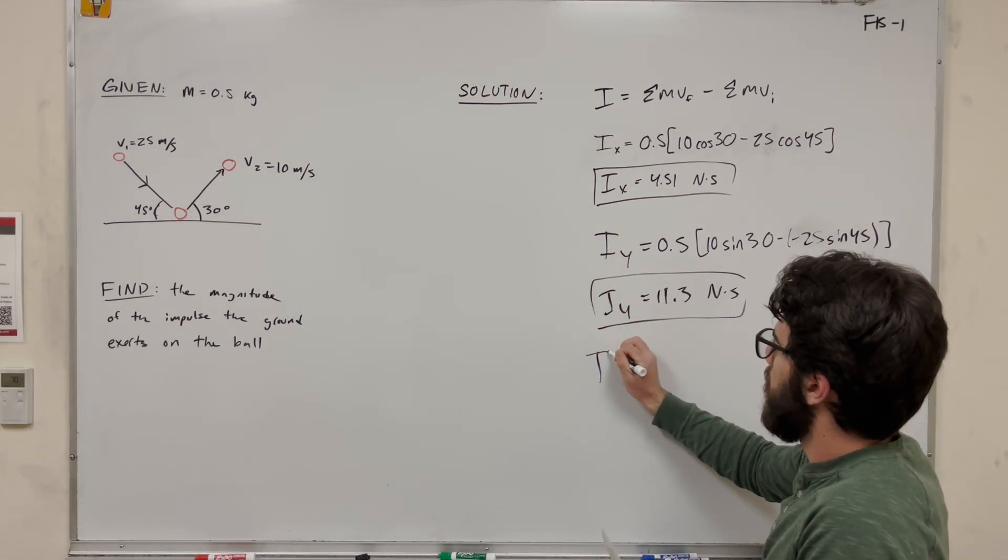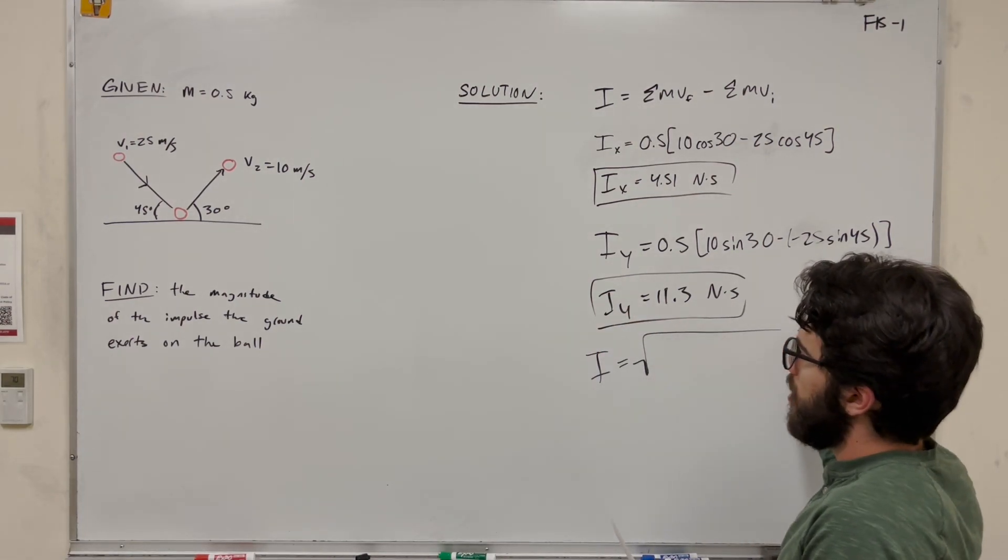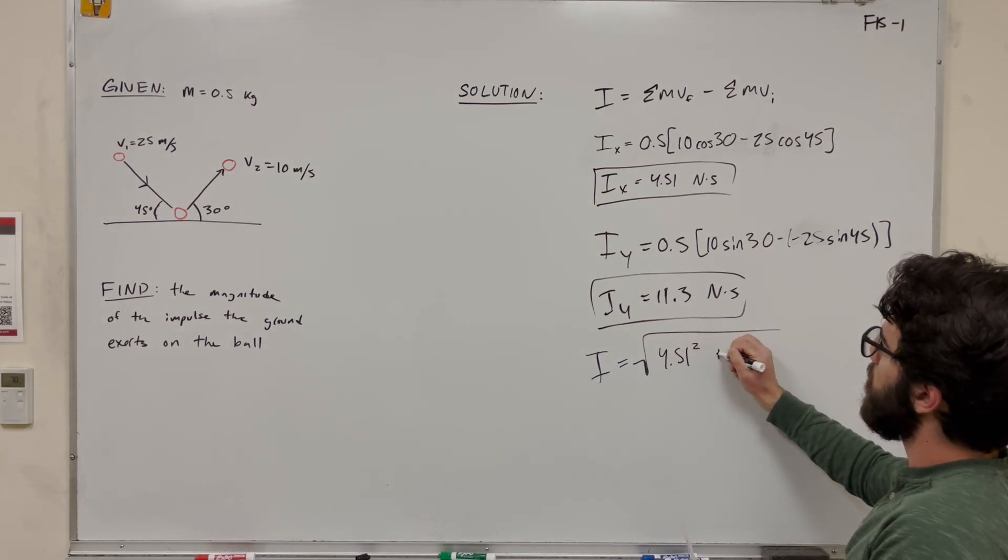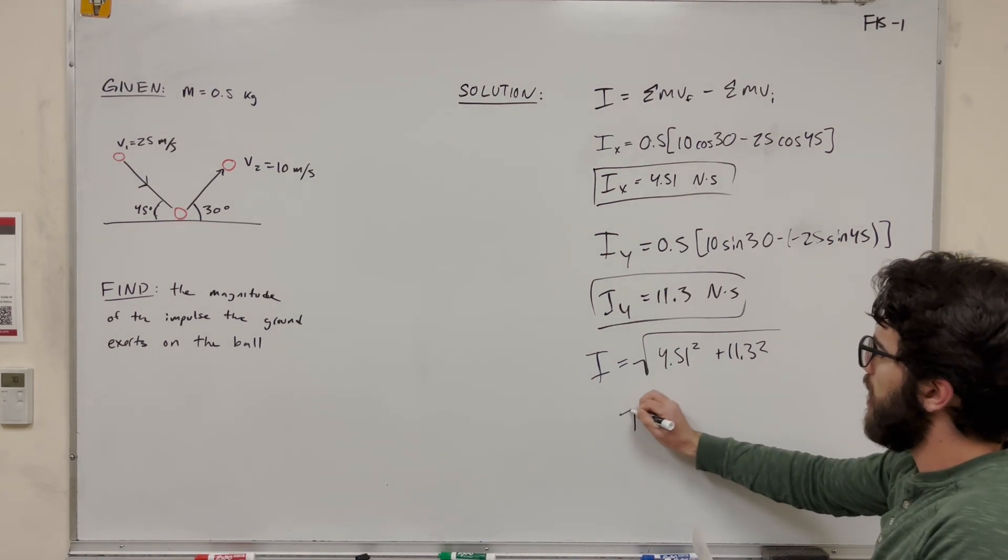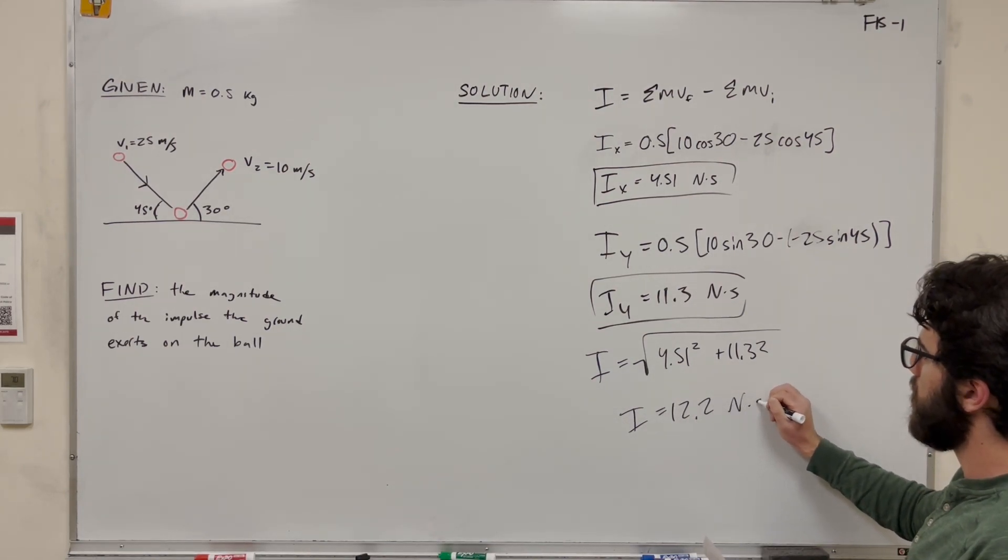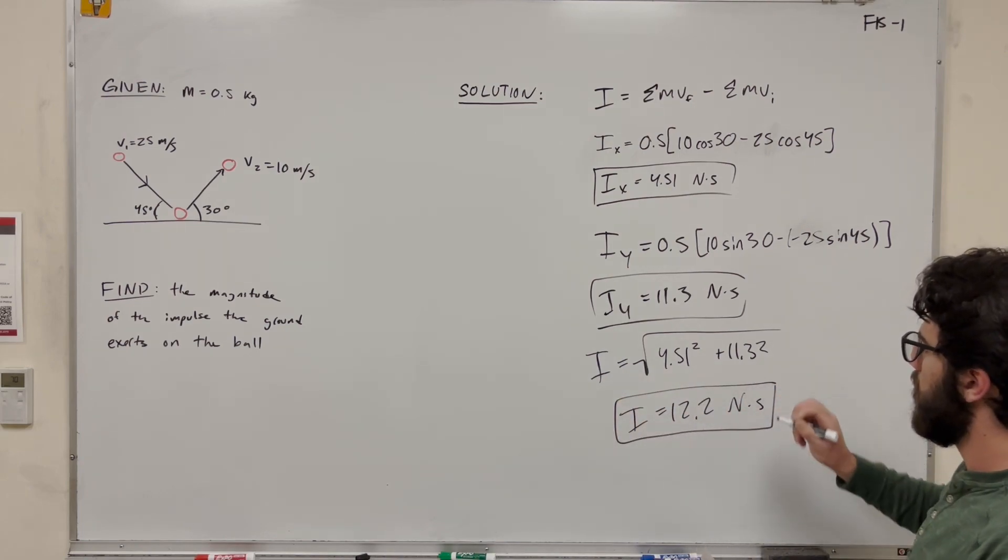Then of course to find the magnitude, we're going to take the square root of 4.53 or 5.1 squared plus 11.3 squared. And then you get that the actual impulse is equal to 12.2 newton-seconds. That's our final answer.